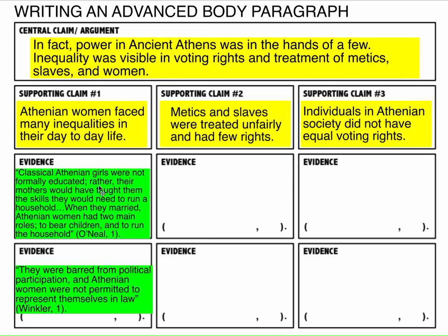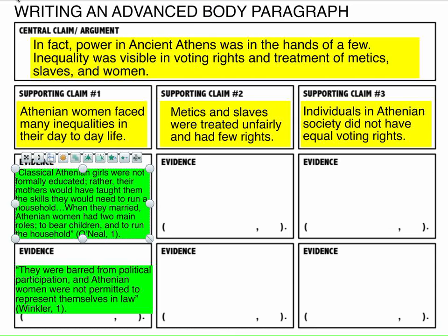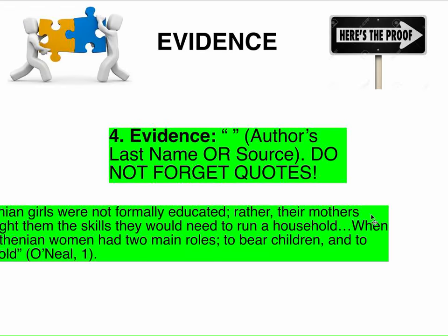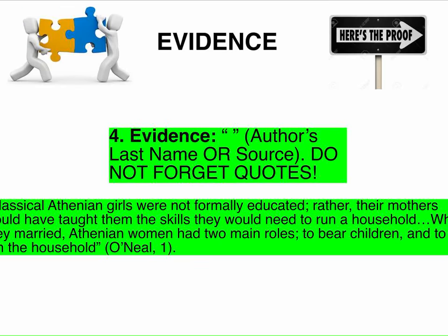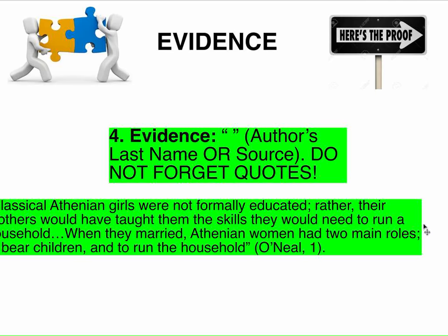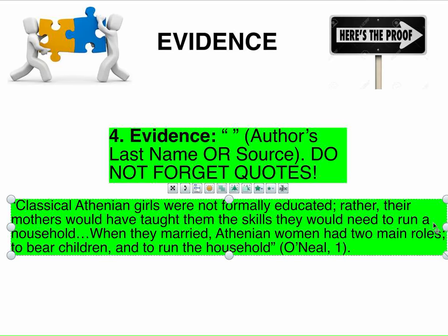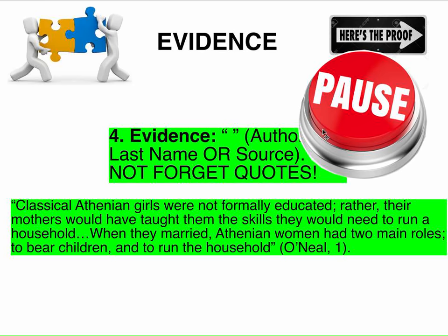I introduce my evidence like this: 'In an analysis of women's rights in ancient Athens published on the Ancient History Encyclopedia website, O'Neill discusses the role of women in ancient Athenian society.' The first piece of evidence I'm using is: 'Classical Athenian girls were not formally educated. Rather, their mothers would have taught them the skills they would need to run a household. When they married, Athenian women had two main roles: to bear children and to run the household.' Pause and write a really good introduction to your evidence.